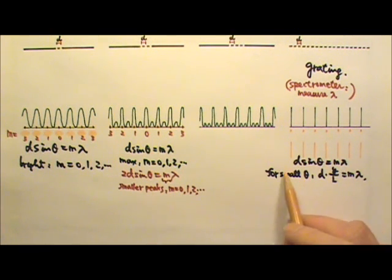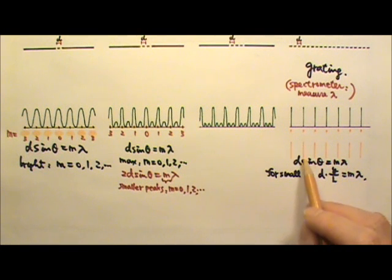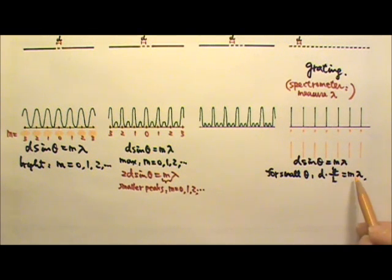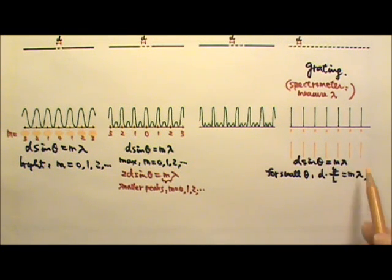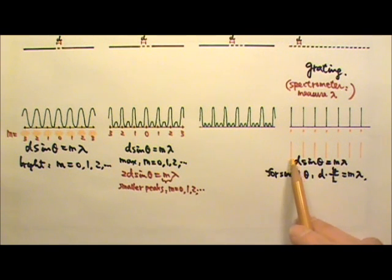And for small angle only, we can replace the sine theta with Y over L, which means that for small angle only, Y would be proportional to M, which means the bright lines on the screen should be evenly spaced. But if the angle is not small, the lines on the screen would not be evenly spaced.